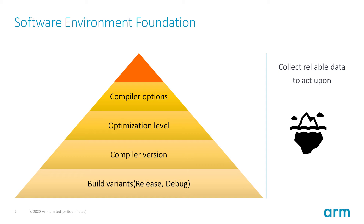Without going into the details, things like having an incorrect build variant or a leftover compiler option have the potential to completely negate any gains from using an optimized model, library, or hardware.